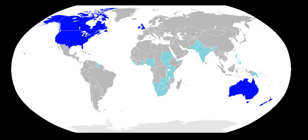Varieties of English vary the most in pronunciation of vowels. The best-known national varieties used as standards for education in non-English-speaking countries are British and American. Countries such as Canada, Australia, Ireland, New Zealand, and South Africa have their own standard varieties which are less often used as standards for education internationally. English has undergone many historical sound changes — most standard varieties are affected by the Great Vowel Shift, which changed the pronunciation of long vowels, but a few dialects have slightly different results. In North America, a number of chain shifts such as the Northern Cities Vowel Shift and Canadian shift have produced very different vowel systems in some regional accents.